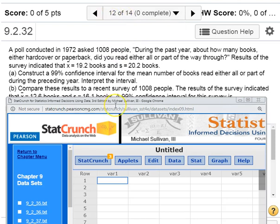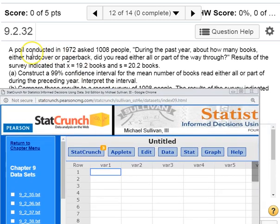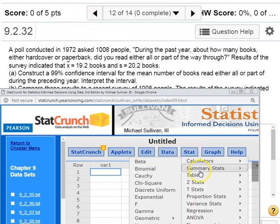And number 12, I'm again going to solve it using StatCrunch. It's going to be pretty similar to the previous one. This problem is about how many books people are reading throughout the year. We have a poll here with some survey data.